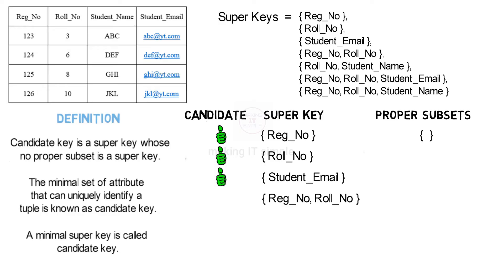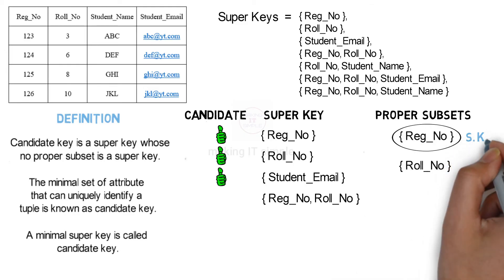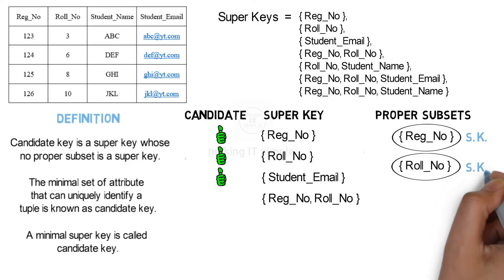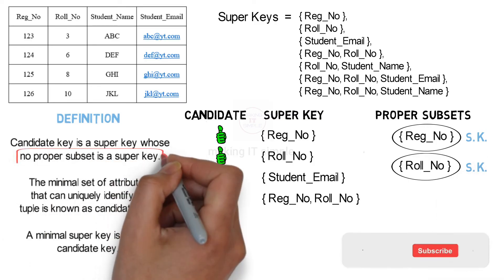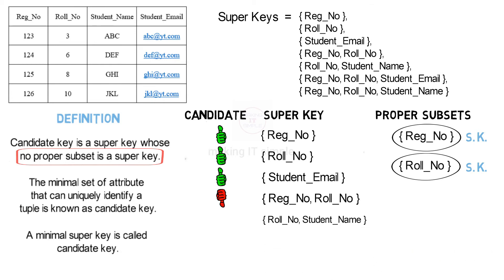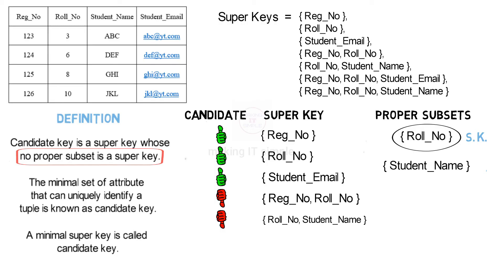Fourth is registration number and role number. The proper subsets of this set include registration number and role number individually. Registration number is a super key and role number is also a super key. As per the definition, no proper subset should be a super key, therefore this super key is not a candidate key. Fifth is role number and student name. Out of its proper subsets, role number is a super key, so as per the definition this super key is not a candidate key.